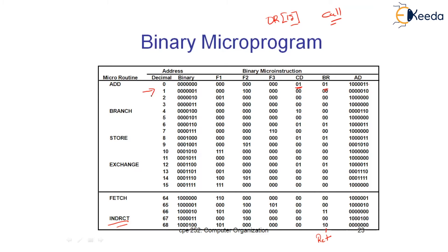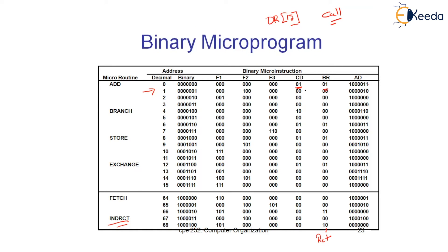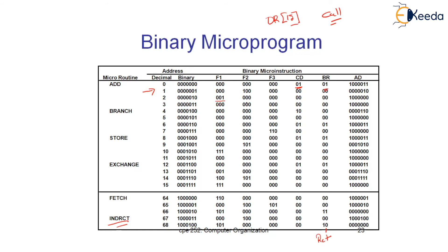After returning from the indirect routine, one more memory read is performed: F1=000 (no operation), F2=100 (read operation), meaning the address specified by the memory address register — its contents get transferred to the data register. After which, unconditionally we jump to the next instruction, where F1=001, which is addition. Addition is performed: accumulator and data register are added, and the result is transferred to the accumulator.